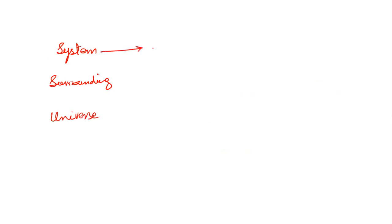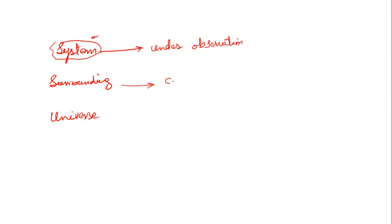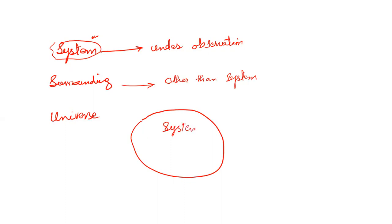System is anything which is under observation — it could be a chemical reaction inside a living organism, any process, or a complete organism. Anything you are studying makes your system. All other things in the universe other than the system comprise the surroundings. Universe is the sum of everything, including system and surroundings. Keep in mind that the laws of thermodynamics are not applicable to system or surroundings alone — these laws are applicable to the universe.